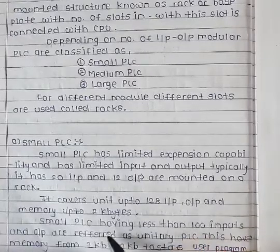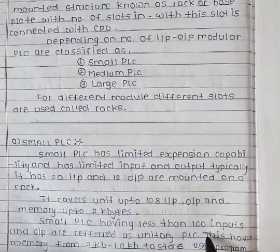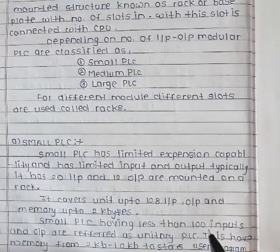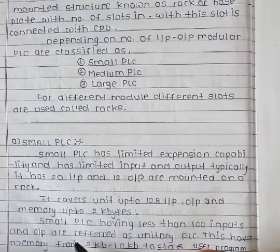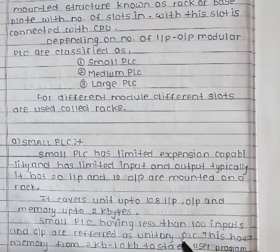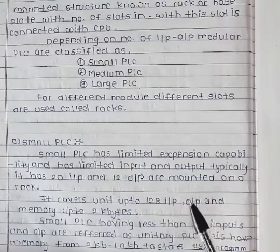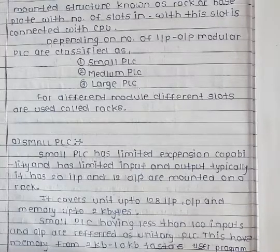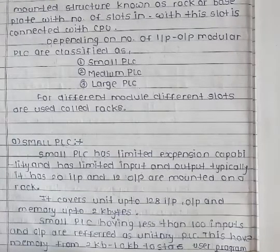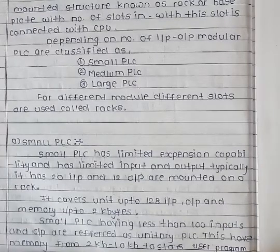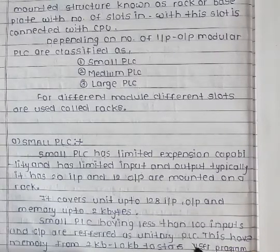Small PLCs having less than 100 inputs and outputs are referred to as a unit PLC. These have memory from 2 kilobytes to 10 kilobytes to store the user program.